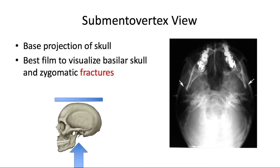The submental vertex view — also called the submental vertical view — is a base projection of the skull with the source below the mandible and the film above the head. Basically, you lean your head all the way back and the x-ray source comes in under your chin. This is the best x-ray for diagnosing basilar skull fractures, and it also provides information about the zygomatic arches and mandible, so it can be used when you suspect a fracture of the zygomatic arch.